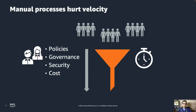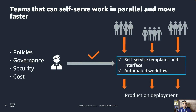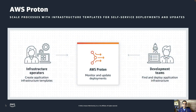You can try DIY-ing, but you have to manually create all the policies and make sure all governance and security are in place. In addition, you also need to make sure your manual process is cost effective. But manual processes hurt your velocity. It has been proven that teams who can self-serve their work and work in parallel are able to move faster. With that, let me introduce you to AWS Proton.